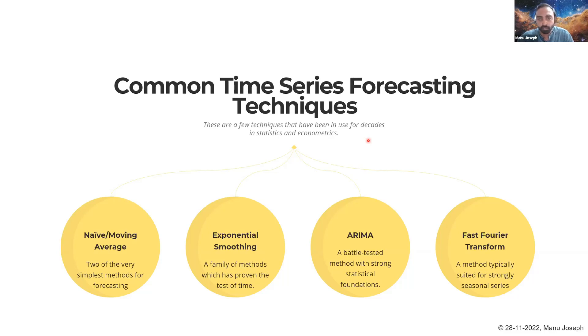Then we have a whole family of methods called exponential smoothing. We have single exponential smoothing, double exponential smoothing, triple exponential smoothing. All of these different methods cover different aspects like trends, seasonality, and other patterns which you can see in a time series. It's a family of methods which has proven the test of time and has shown its usefulness even now today.